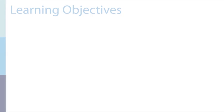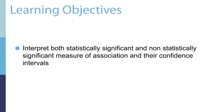In this segment, we're going to talk about confidence intervals. Confidence intervals help us understand the range of variability or uncertainty in either our measure of association or our measure of disease occurrence. After you have reviewed this segment, you should be able to interpret both statistically significant and non-statistically significant measures of association or measures of disease occurrence and their confidence intervals.